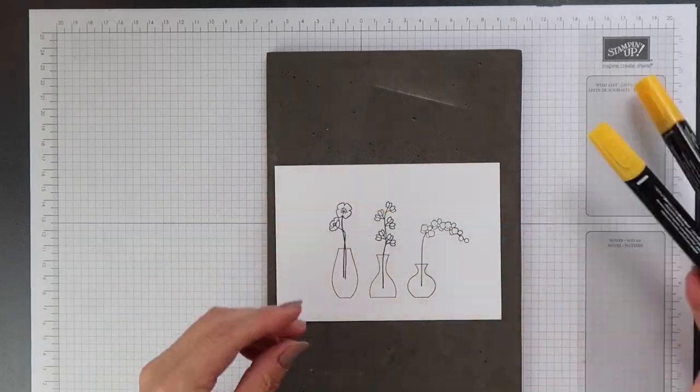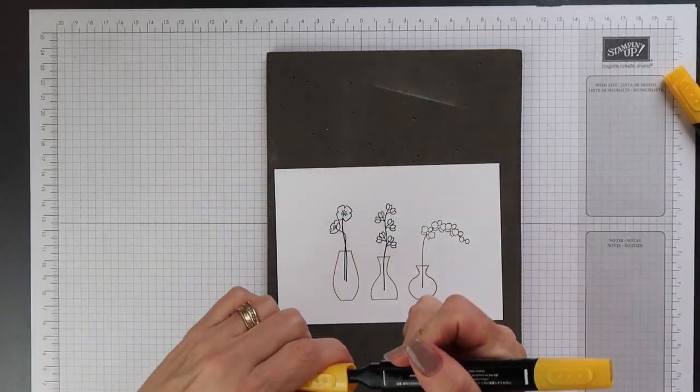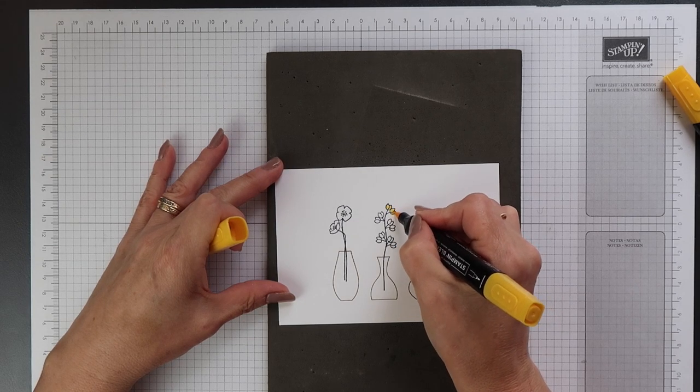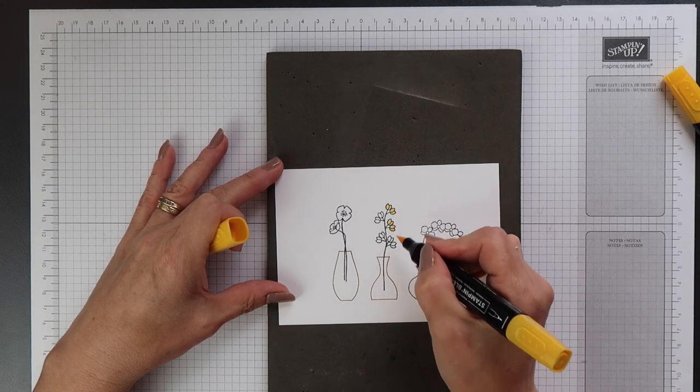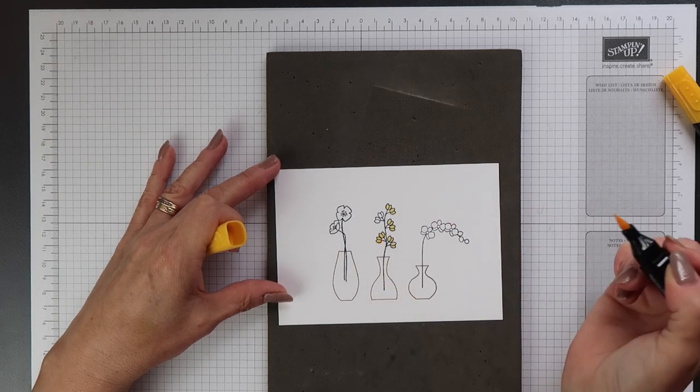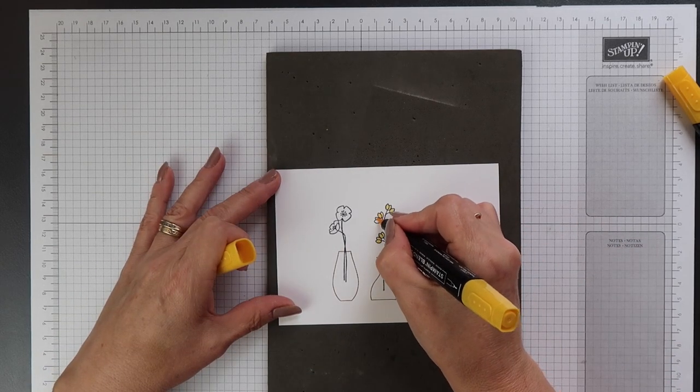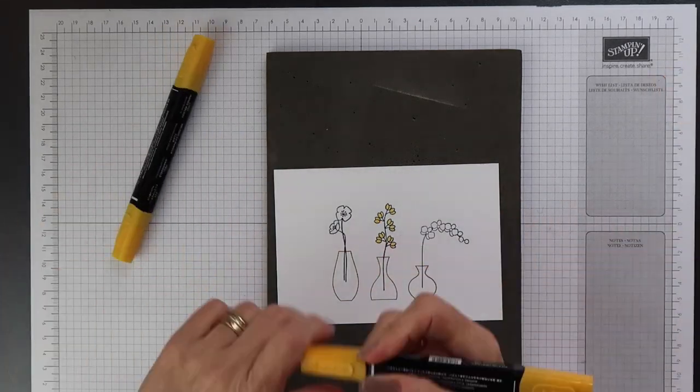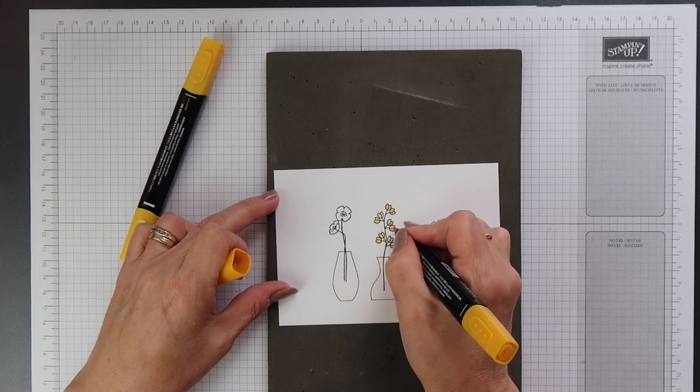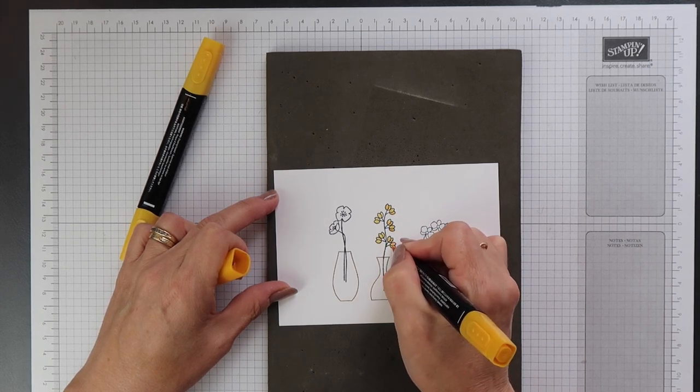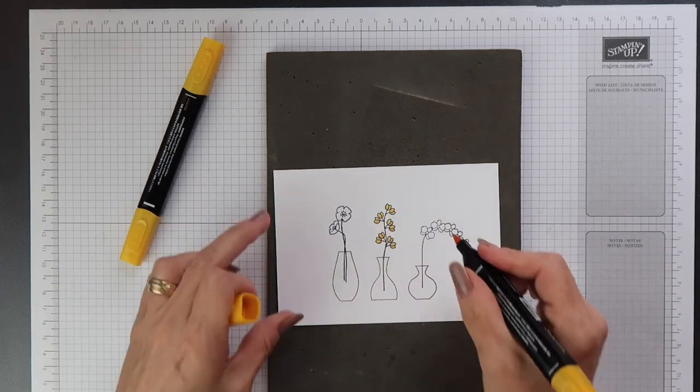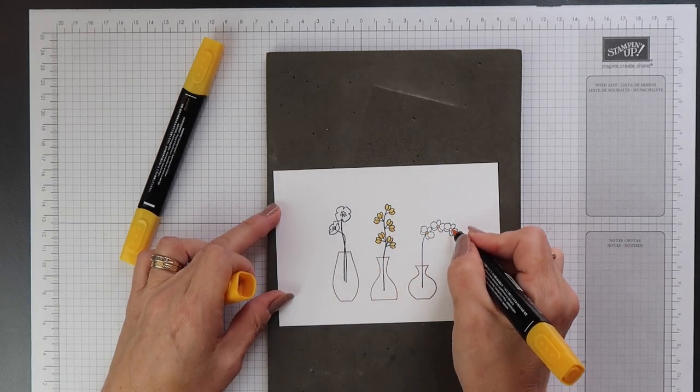I'm going to start my colouring using the Mango Melody Stampin' Blends alcohol markers. And I'm using the light one first and I'll cover the complete image. And then I'll use the dark one and I'll just go at the bottom of each petal. I'm just doing very basic colouring for this image today. I'm not going to do any blending at all.